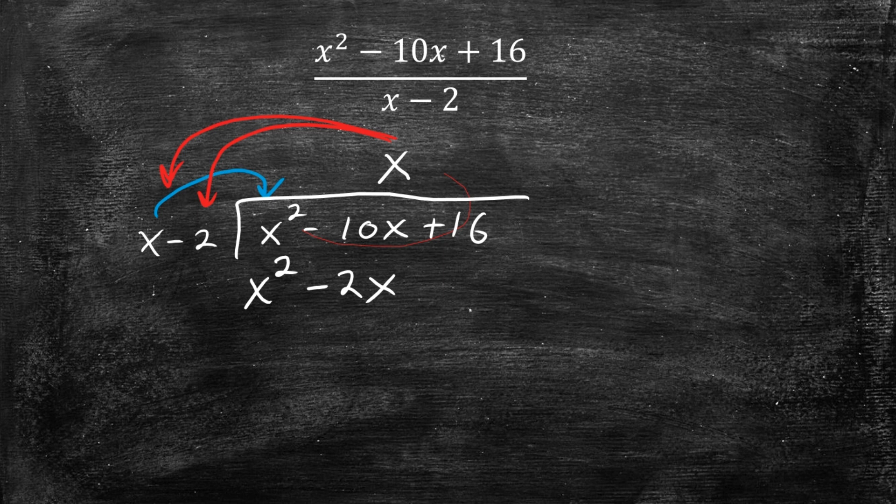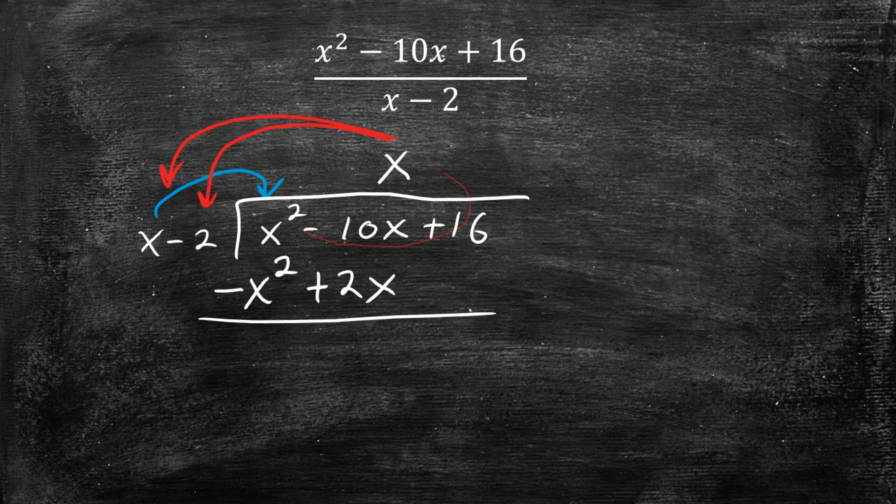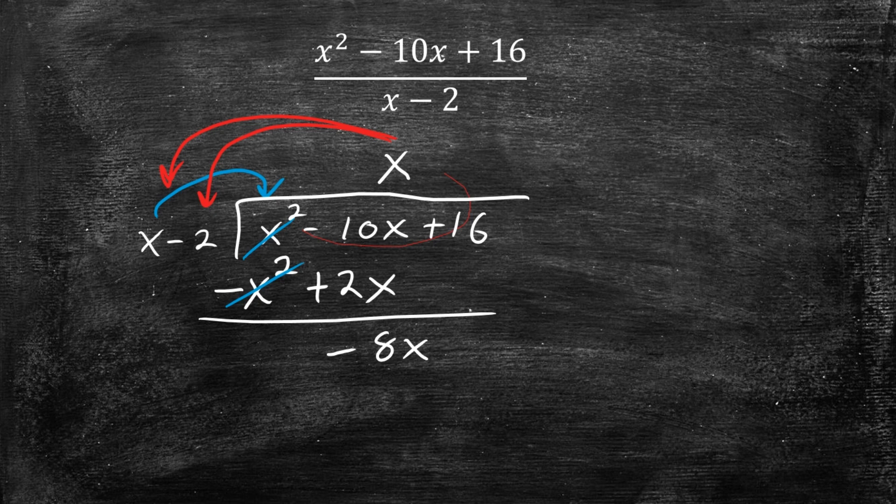So now that we did that, what we want to do is change the signs, subtract those and then combine them. So when we do that, these x squareds cancel out. And what we get is negative 8x. And then we bring down that term there, so plus 16. And we repeat the process.